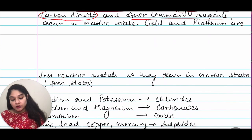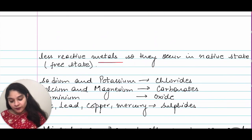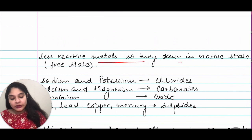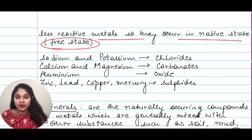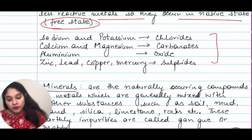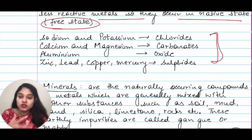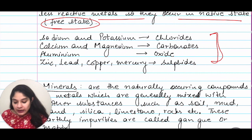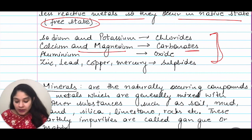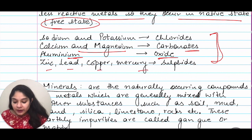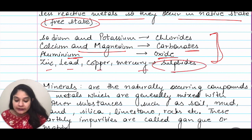Gold and platinum are less reactive metals, so they occur in the native or free state. You should remember these: sodium and potassium are majorly found as chlorides; calcium and magnesium as carbonates; aluminum in oxide; and zinc, lead, copper, and mercury in sulfides.